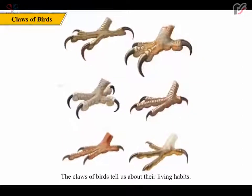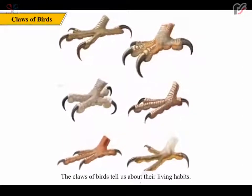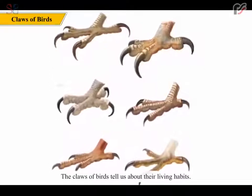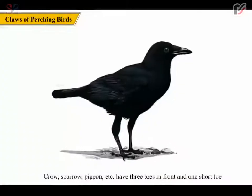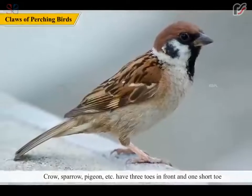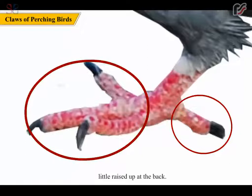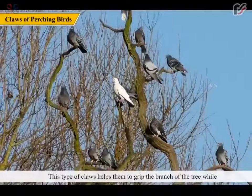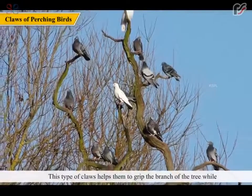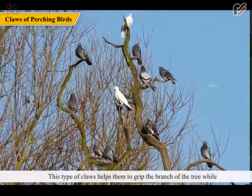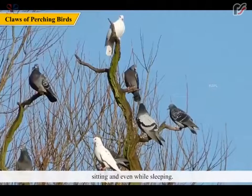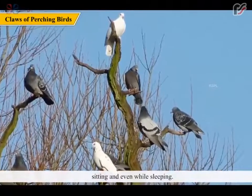The claws of birds tell us about their living habits. Crow, sparrow, pigeon etc. have three toes in front and one short toe raised up at the back. This type of claws helps them to grip the branch of the tree while sitting and even while sleeping.